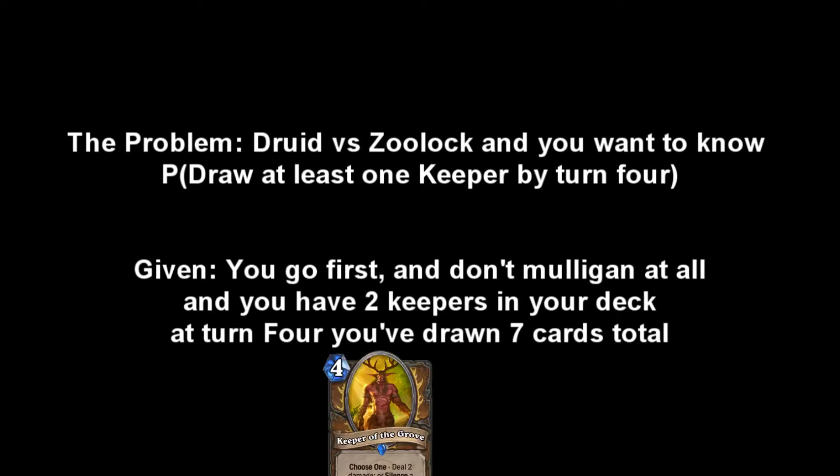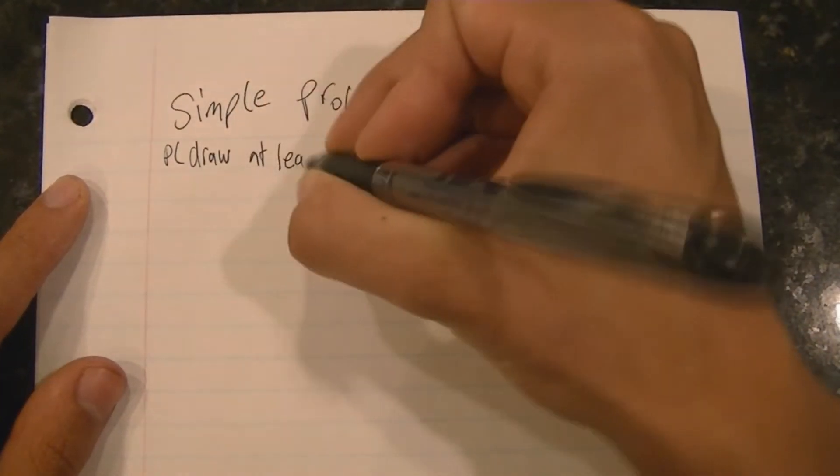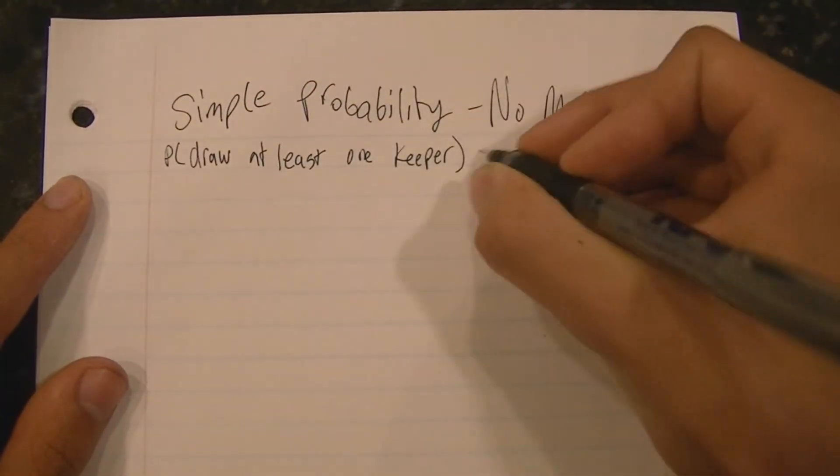It's a Druid vs. Zoolock and you want to know the probability of drawing at least one Keeper by turn four. And you don't mulligan at all and you have two Keepers in your deck. And you've gone second. So by turn four you'll have seven cards.